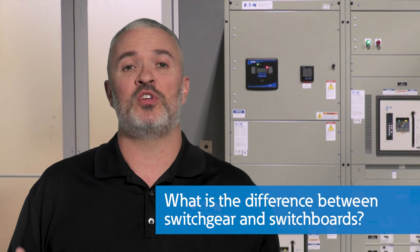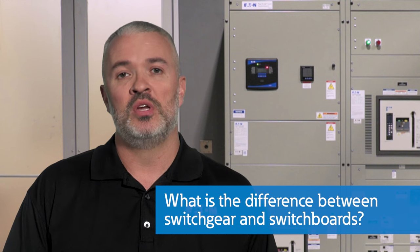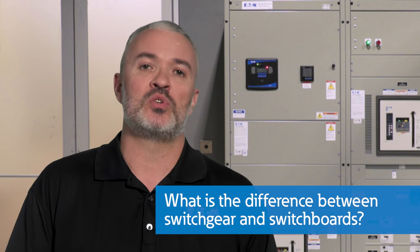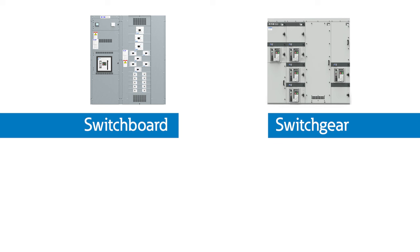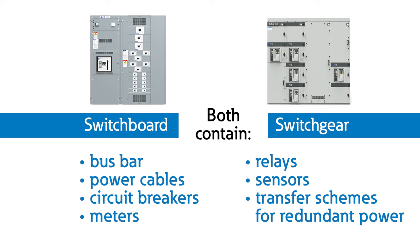What is the difference between switchgear and switchboards? Switchboards are most often confused with switchgear because from the outside, both are freestanding metal enclosures that house bus bar, power cables, circuit breakers, meters, relays, sensors, and even transfer schemes for redundant power.